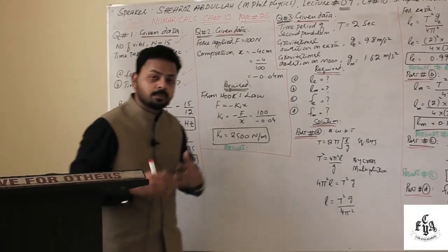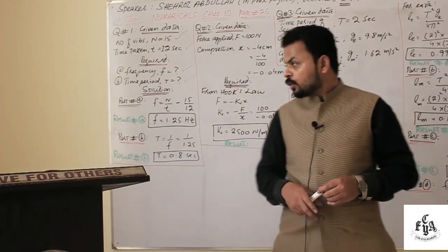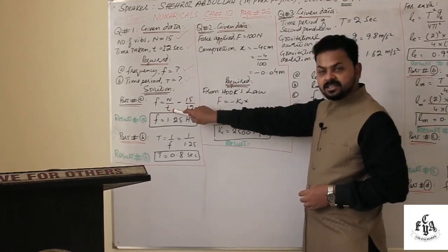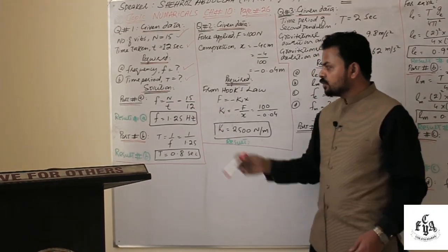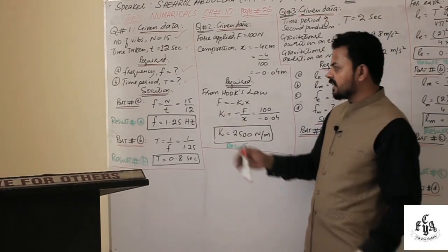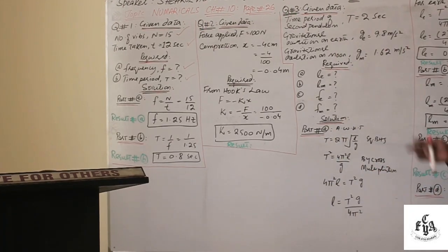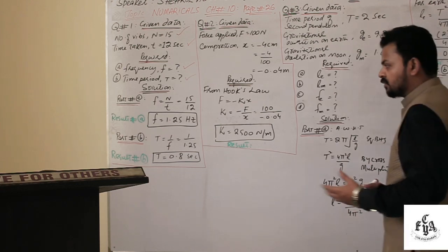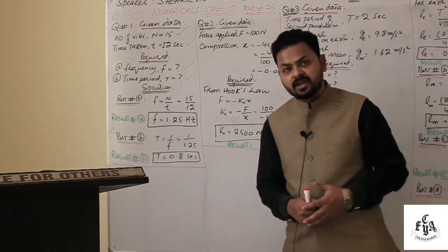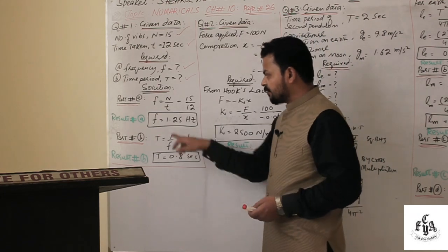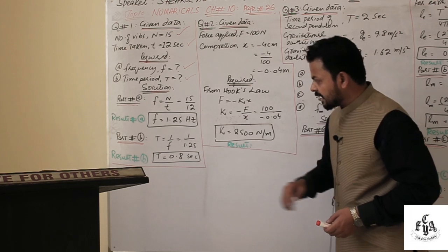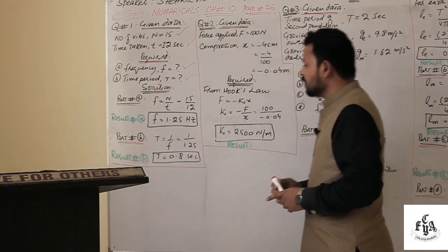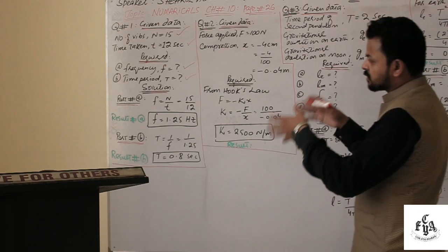From the formula of frequency — frequency is the number of vibrations per second — we have f = n/t. The n value is 15 and t value is 12, giving us 1.25 Hz. For time period, since T and f are inversely related, T = 1/f = 1/1.25, which gives us 0.8 seconds.